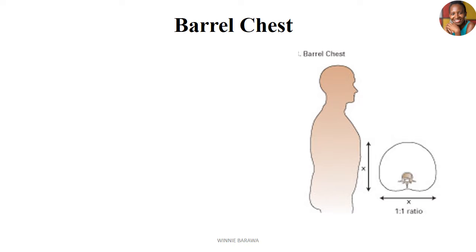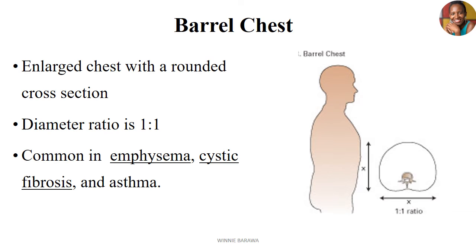Let's start with the barrel chest. The barrel chest takes the shape or appearance of a barrel — a rounded, circular appearance when analyzing chest shapes. When a patient has a barrel chest, it means they have an enlarged chest with a rounded cross-section. The diameter ratio changes to one to one.